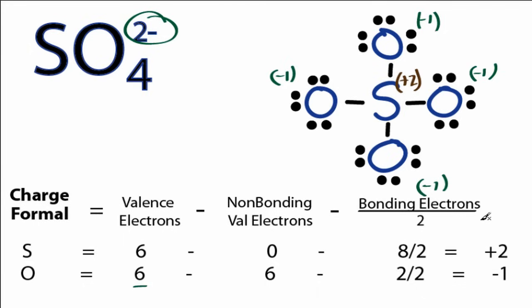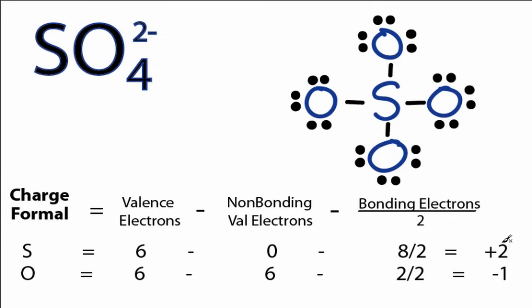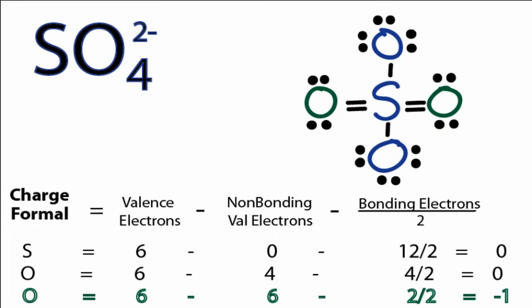So let's see if we might be able to do another Lewis structure that has more 0s for the formal charges. When I see this plus 2 charge here on the sulfur, I know that I can move electrons from the outer valence electrons of the oxygen into the middle. So if I do that twice — move these 2 into the middle to form double bonds and get rid of them — I think that will get rid of the positive 2 charge. So let's try that and then recalculate our formal charges.